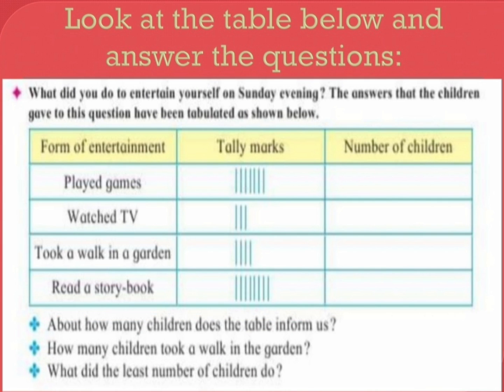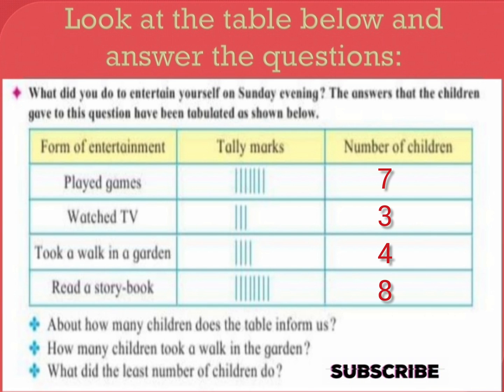Let's solve another example. What did you do to entertain yourself on Sunday evening? The answers that the children gave have been tabulated. The second column shows the tally mark, which is the number of children: played games 7, watched TV 3, took a walk in the garden 4, read a storybook 8.